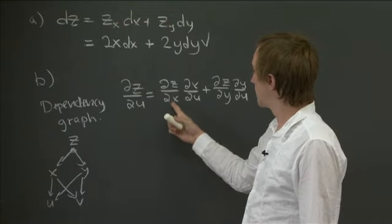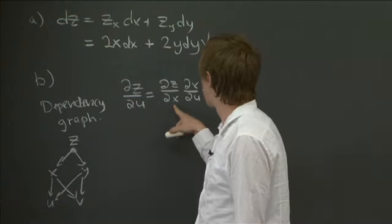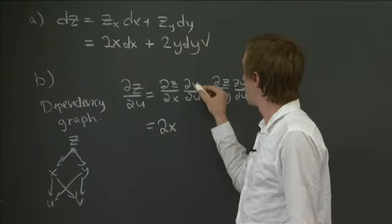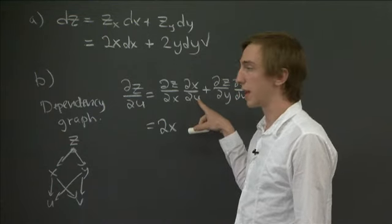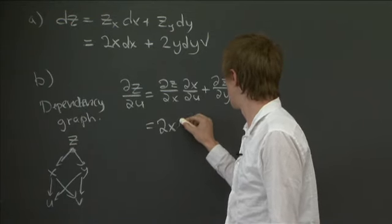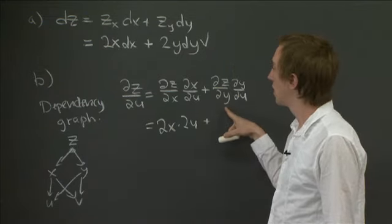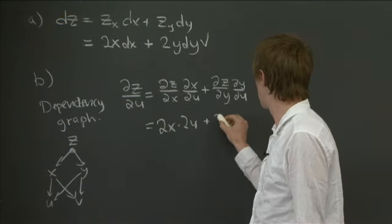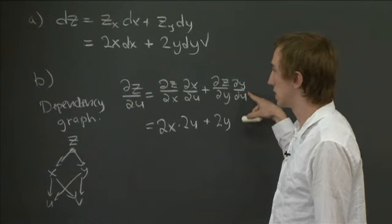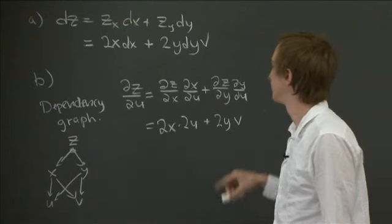And now, these partials are ones that we can just compute from our formulas. So for instance, ∂z/∂x, that's 2x, which we computed. Now, ∂x/∂u, we have to remember that x is defined as u squared minus v squared. And so ∂x/∂u, that's 2u. ∂z/∂y, again, is this 2y that we computed. And ∂y/∂u is v. This v is just because y was uv, and we take a partial in the u direction.